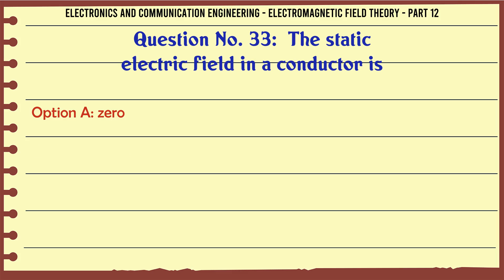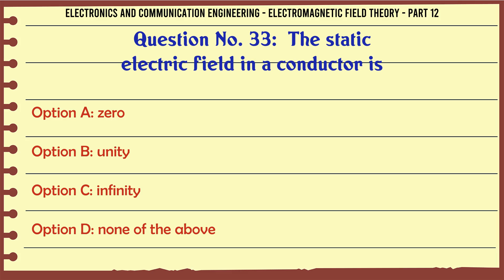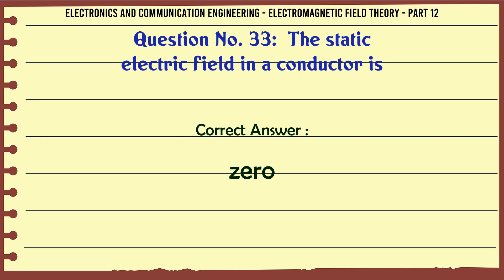The static electric field in a conductor is: A. 0, B. Unity, C. Infinity, D. None of the above. The correct answer is 0.